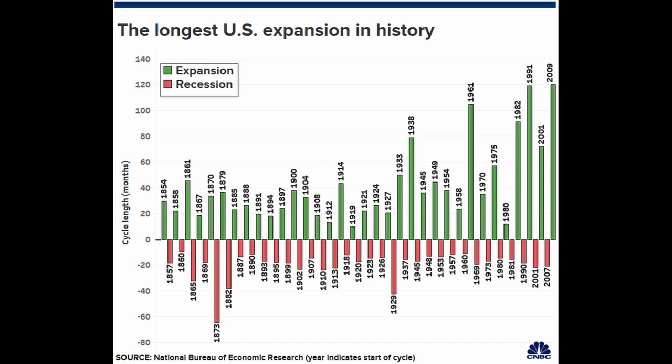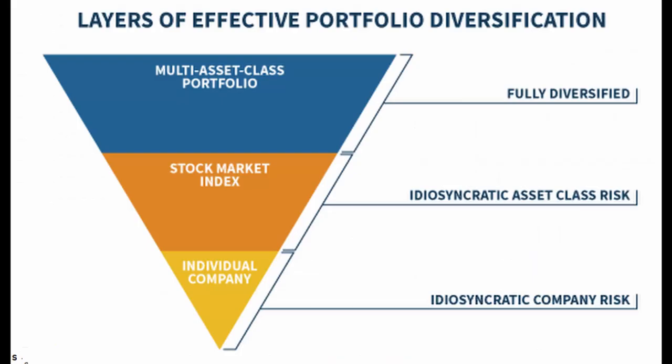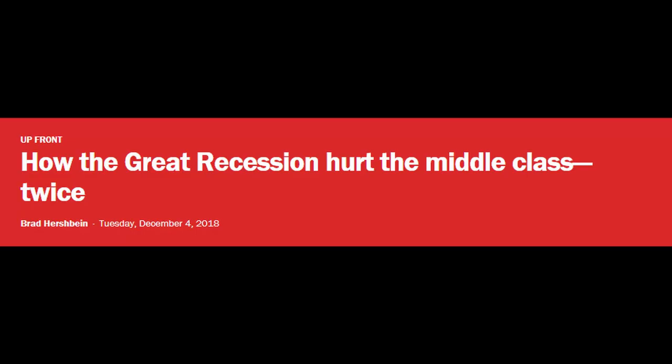Whenever the market booms, the share of wealth going to those at the very top increases. When that boom goes bust, that share drops somewhat, but then comes roaring back even higher with the next asset bubble. Those at the very top are often diversified, so even if their wealth as a group technically goes down due to a stock market crash, as individuals they are generally fine, and it is the middle class that bear the brunt of the damage.